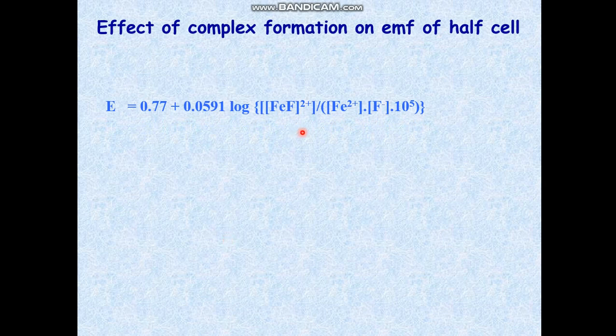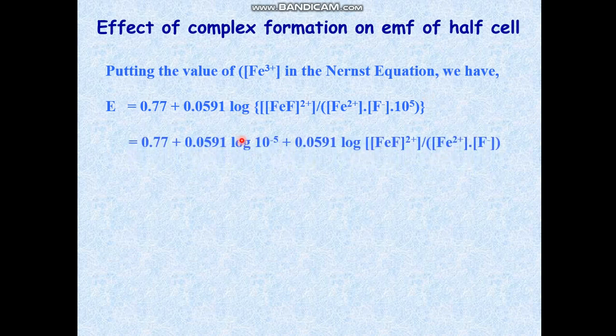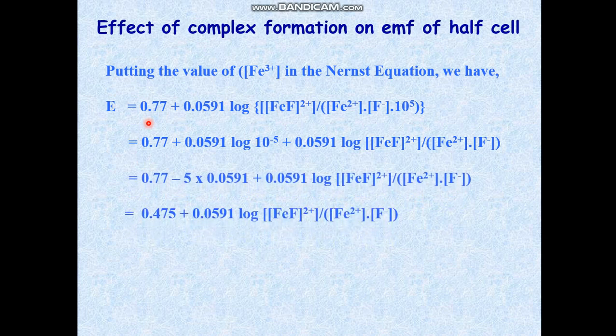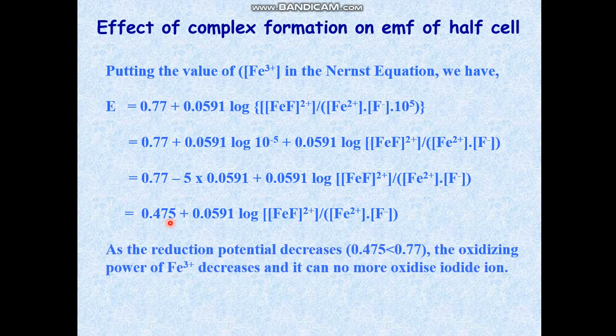After having put this value, we get an equation which gives a part that is merged with the standard potential to get the new formal potential of +0.475 V, which is less than that of the iodine-iodide system. So as the reduction potential decreases from 0.77 V to 0.475 V, it crosses past the value of 0.54 V of iodine. So the oxidizing power of ferric ions decreases and this iron is now masked.